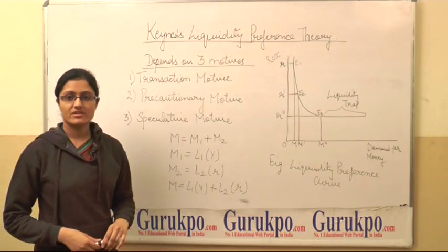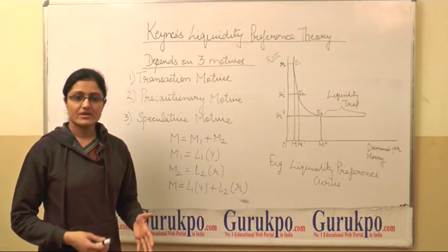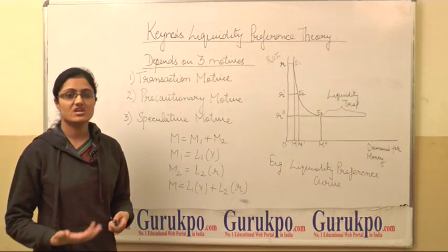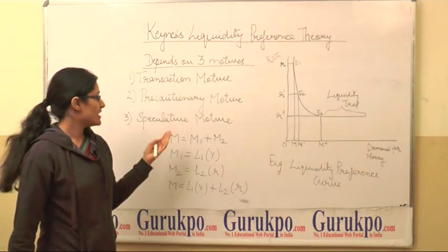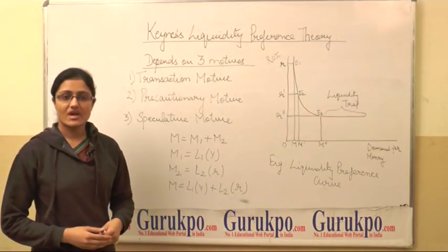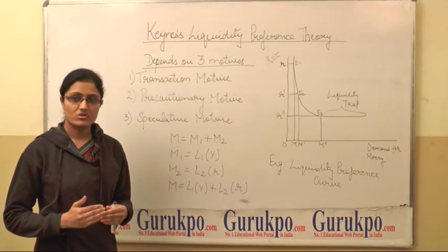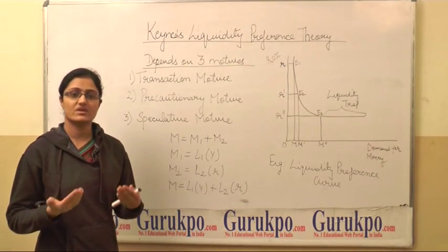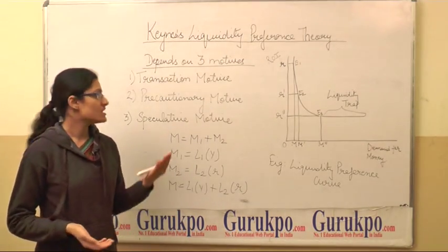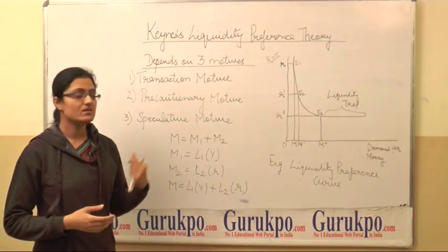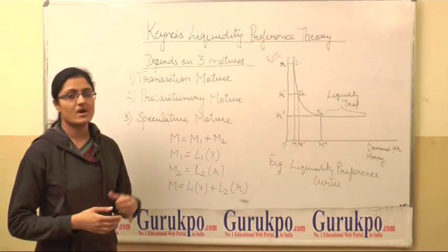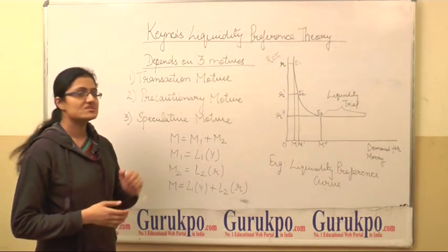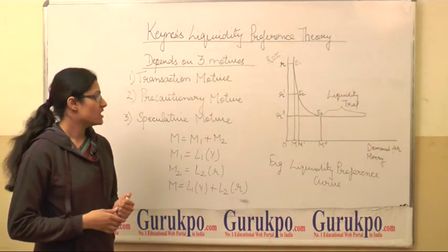Third is speculative motive. Under this motive, we take advantages of the changes in rate of interest. When the rate of interest rises, the demand for money falls. And when the rate of interest falls, the demand for money rises. That is an inverse relationship between speculative demand for money and rate of interest. So it depends upon the rate of interest.